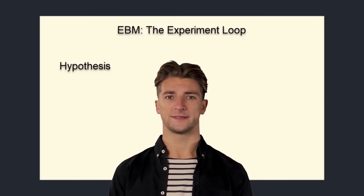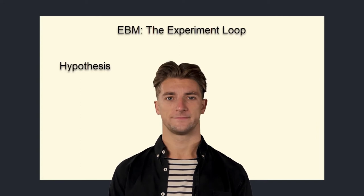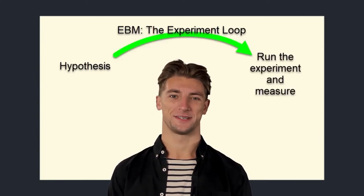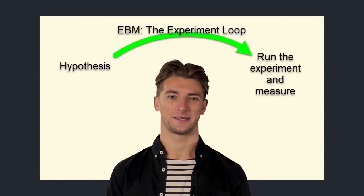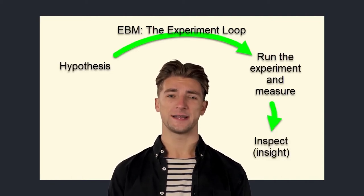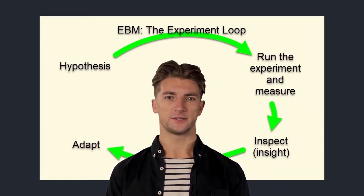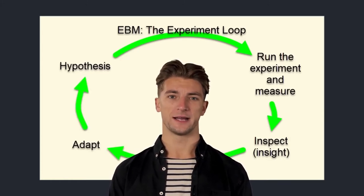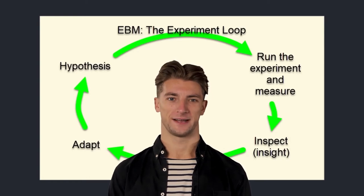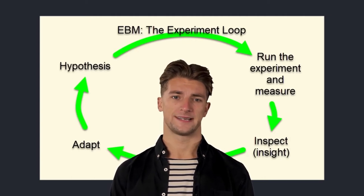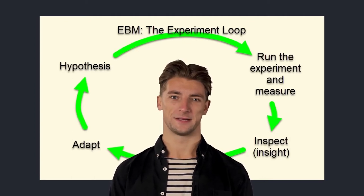Instead, we take small steps, which we call experiments. An experiment is a loop with four phases. You make a hypothesis, which is an idea that brings you closer to the strategic goal. Then you and your team create an experiment and run it to prove the hypothesis. You will come to an insight where you will typically get more ideas. These two phases — inspect and adapt — are treated as a final process step that completes the cycle.